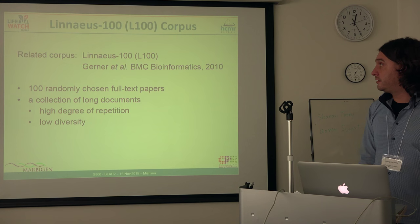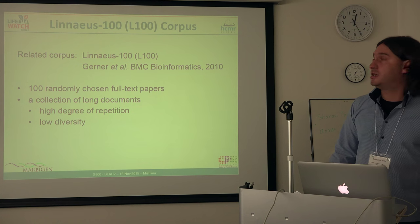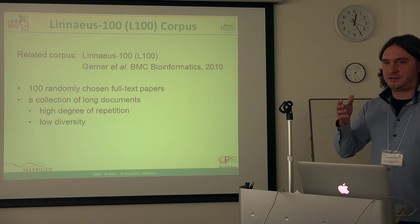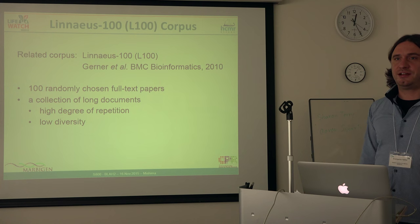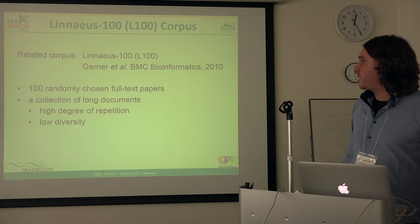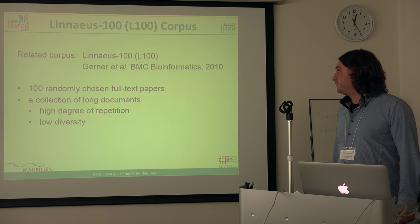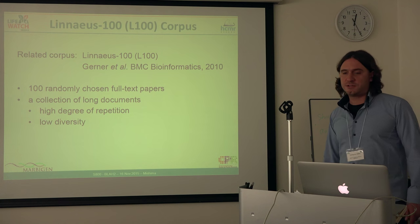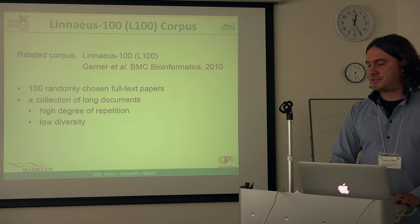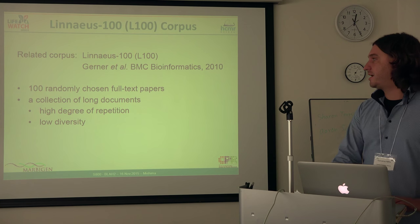When we were starting this work on the species tagger, the Linnaeus software and the Linnaeus corpus were already out — and I'm very happy that Goran is here attending. Linnaeus is a corpus that comprises 100 annotated full-text articles, and as these are full-text articles, it is implicit that some species names that an article relates to get repeated many times.